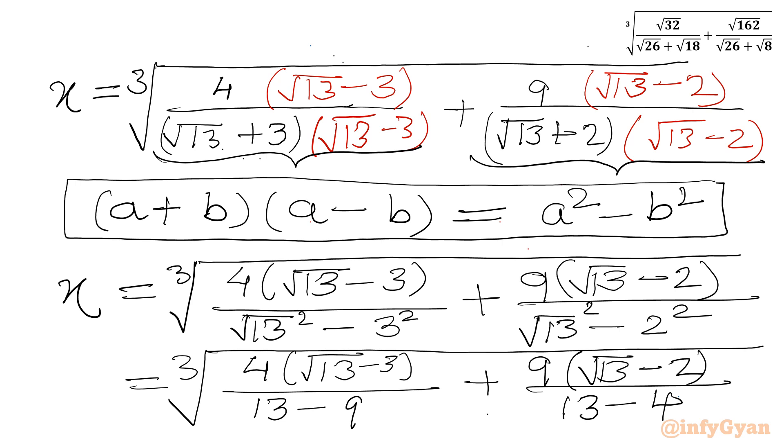Now you can see 13 minus 9 in the denominator. So I can write here x equal to cube root of 4 times root 13 minus 3 over 4, here I will write 9 times root 13 minus 2 over 9.